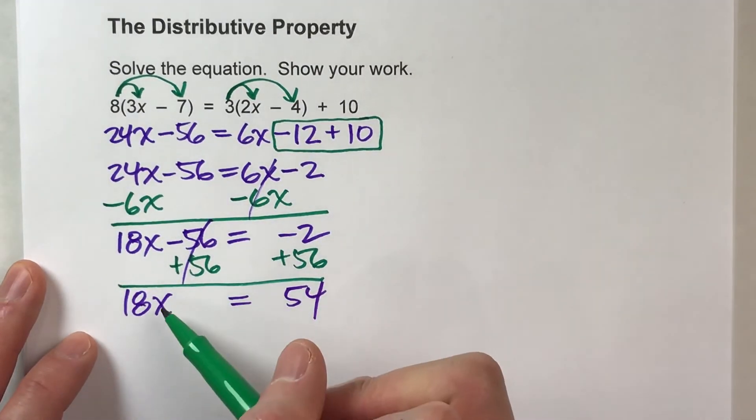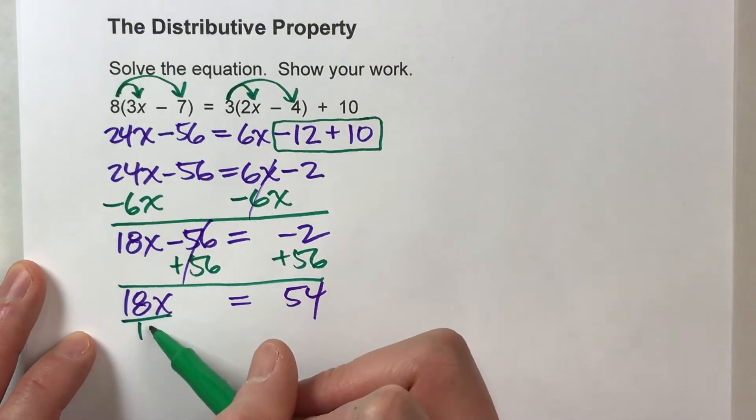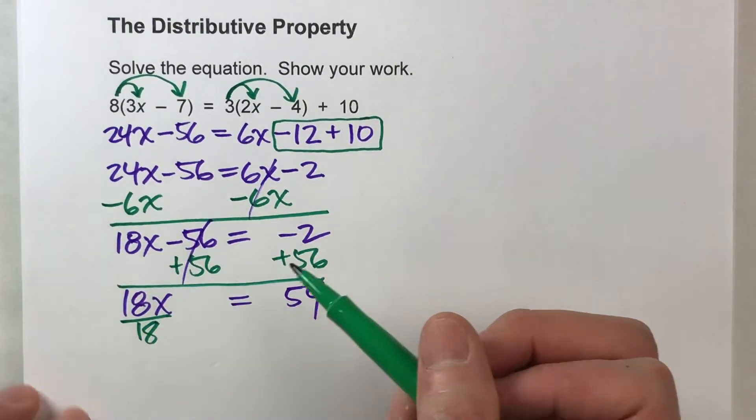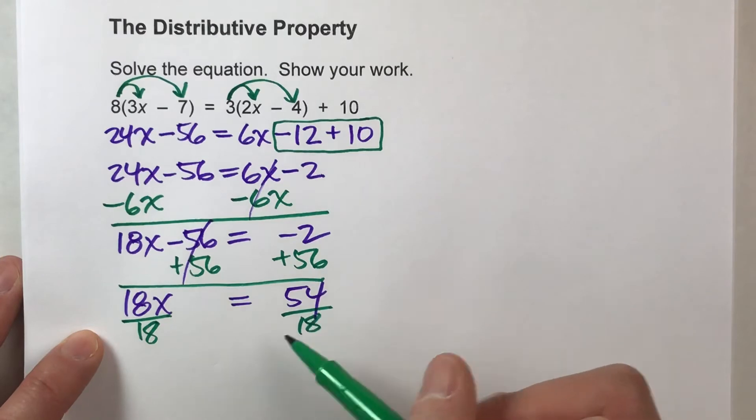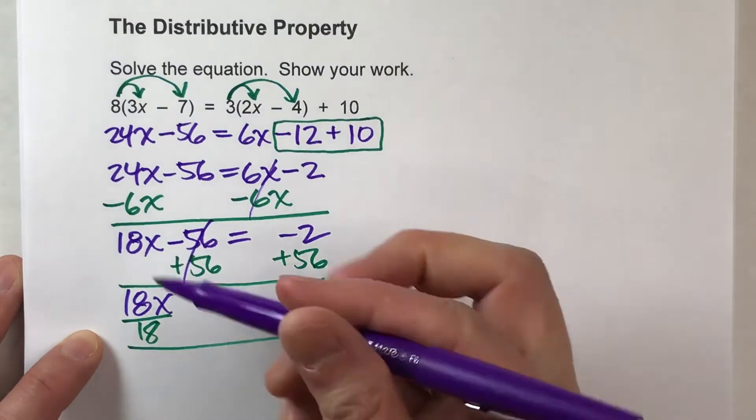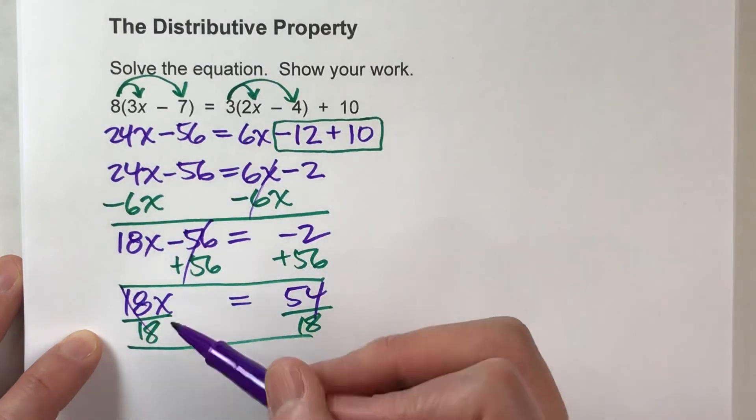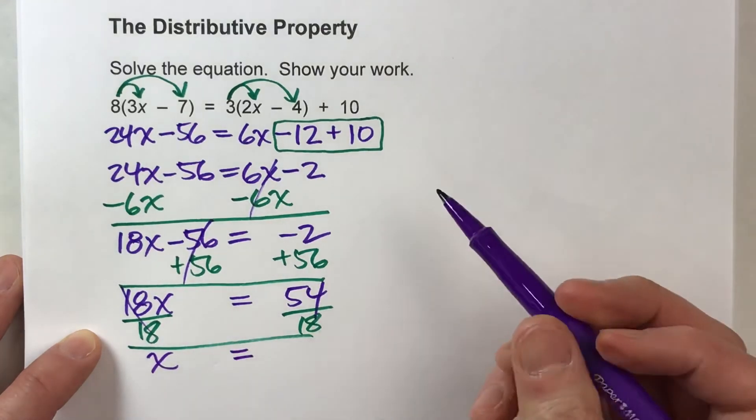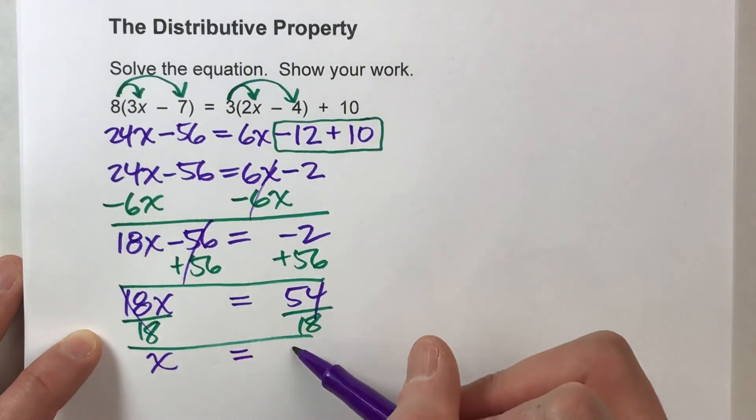And I've almost got x now, but it's got x times 18, so I'm going to divide by 18. And what I do to one side, I have to do the other. And when I do that, the 18's undo each other, but the x drops down, the equals drops down, and 54 divided by 18 is 3.